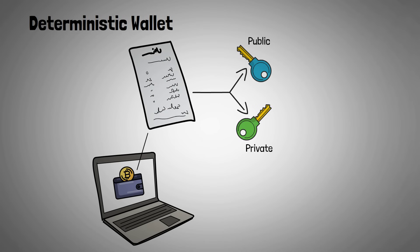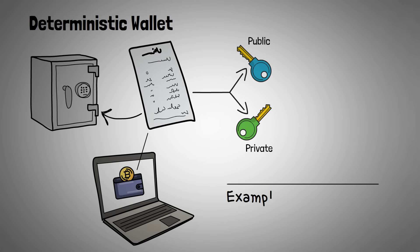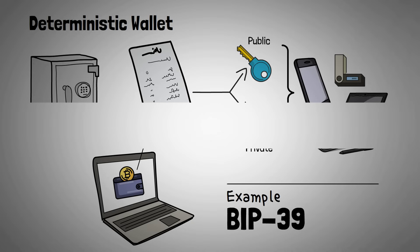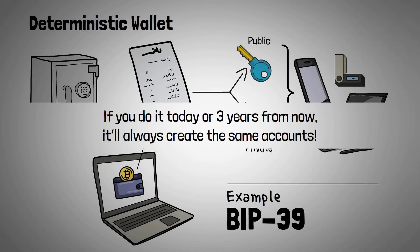This is the most popular kind of crypto wallet because as long as you have the seed phrase somewhere safe, you can always get access to your wallet. BIP39 is one way to generate a deterministic wallet. It doesn't matter if you use the seed phrase on your phone or your laptop or your ledger, or if you do it today or three years from now, that seed phrase using the BIP39 standard will always create the same crypto accounts.